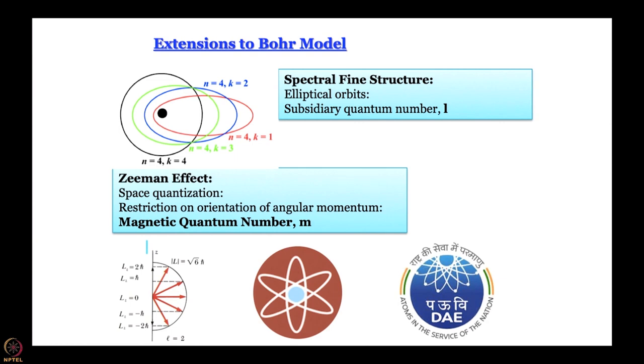So we have three quantum numbers: n tells you about the energy, l gives small changes in energy and mostly represents angular momentum (√(l(l+1)) × ħ), and m tells you about the orientation of the orbit — or the orientation of the angular momentum vector. Eventually we are only going to talk about the orientation of the angular momentum vector. There is a fourth quantum number, spin, which arises from a completely different experiment, and that experiment we will discuss shortly.